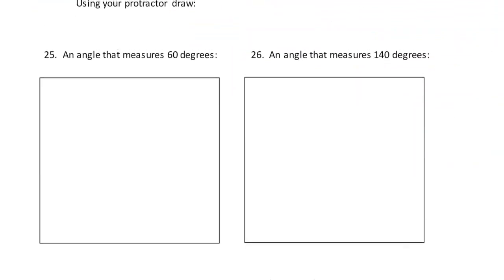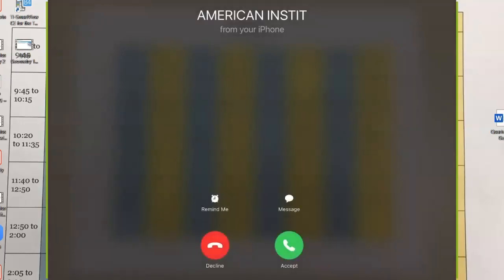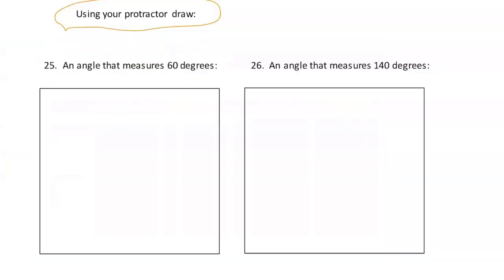Now, using your protractor — an angle that measures 60 degrees, what would that look like? 90 would be straight up, so going a little less than that — something like this — does that seem reasonable that this could be 60 degrees? I think you would say yes.